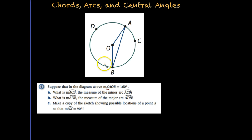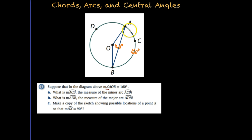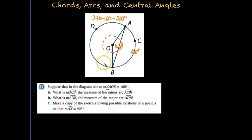Let's look at another example. Suppose the measure of angle AOB is 160 degrees, which is marked right here in the central angle. Part A: what is the measure of arc ACB, which is the minor arc? Remember the relationship is the same, so that would be 160 degrees. Part B: what is the measure of arc ADB? That's the major arc. In order to find the major arc, we think that a circle is 360 degrees. So we take 360 less 160 degrees to find that arc ADB is also 200 degrees.